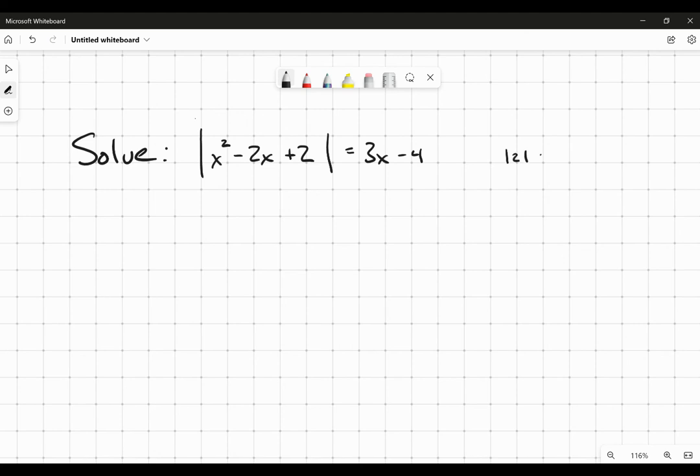Remember how this works: if I've got the absolute value of two, the answer is two. If I've got the absolute value of negative two, the answer is two. So whether what's inside is positive or negative, the answer is the positive value.